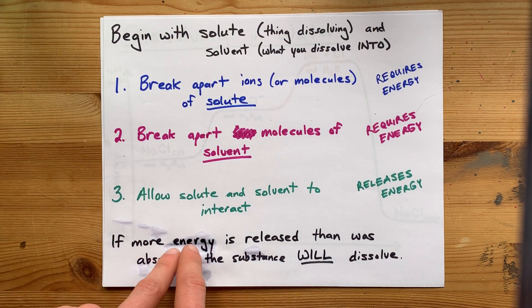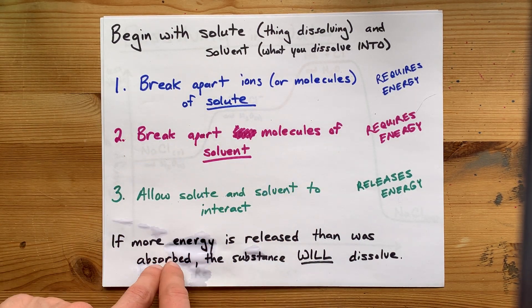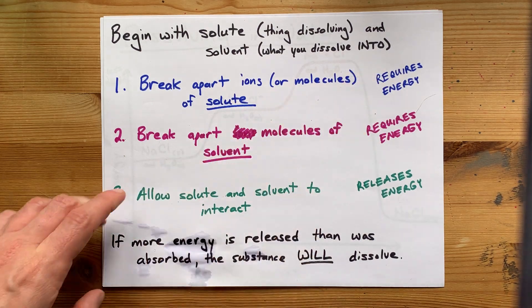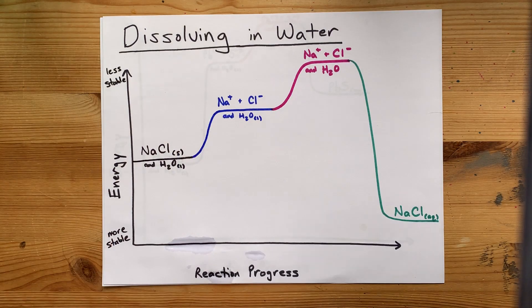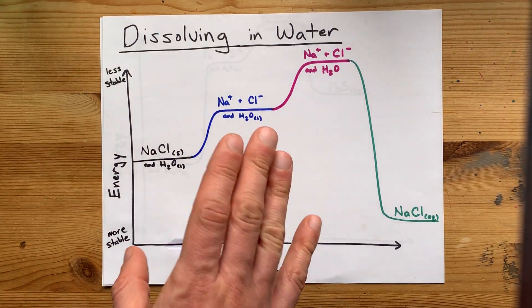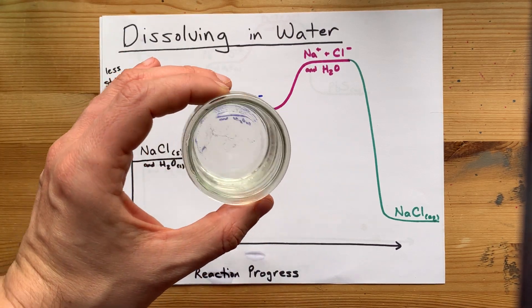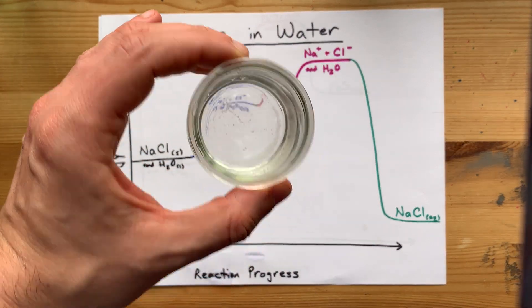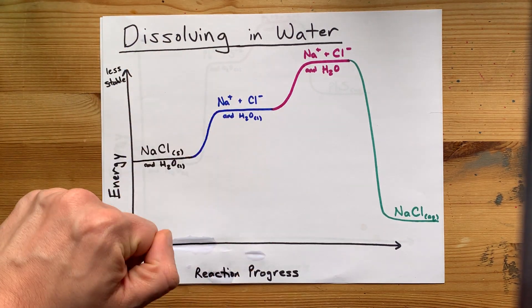Here's the summary. If more energy is released in that third step than was absorbed in the first two steps, then in general, the substance will dissolve. Here's a diagram I already drew for you about salt dissolving in water. And take a look—my salt is almost all gone. I just needed to give it some time. Salt does dissolve in water.